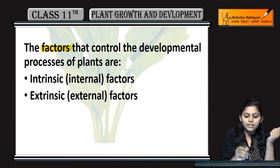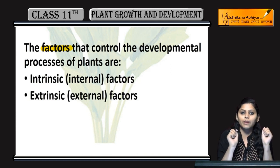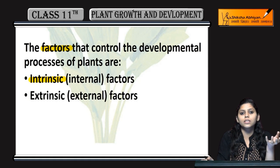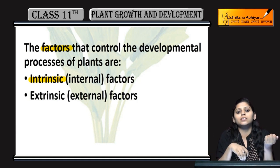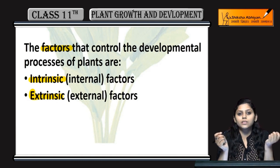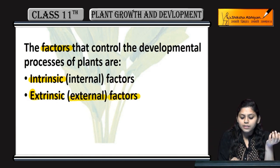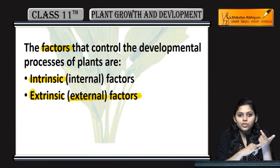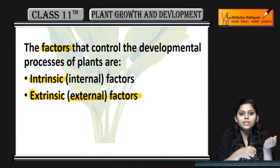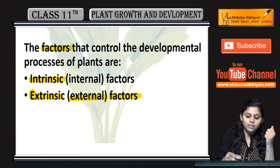These factors control the growth and development of plants. There are two types of factors: intrinsic factors, which are internal factors of the plant, and extrinsic factors, which are external environmental factors such as temperature, atmospheric pressure, and availability of nutrients.